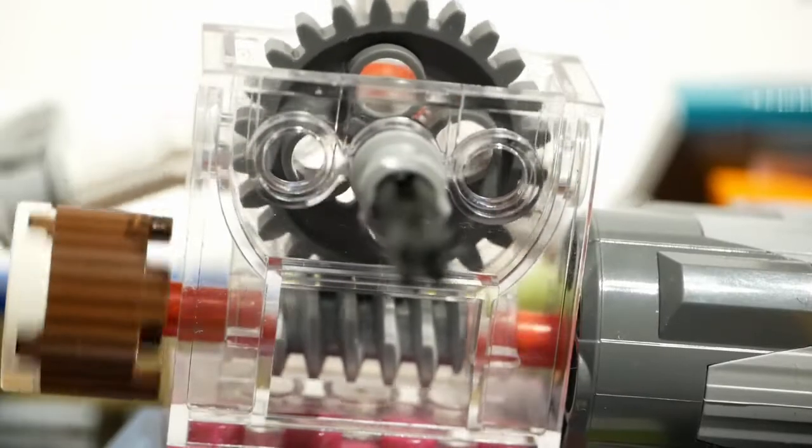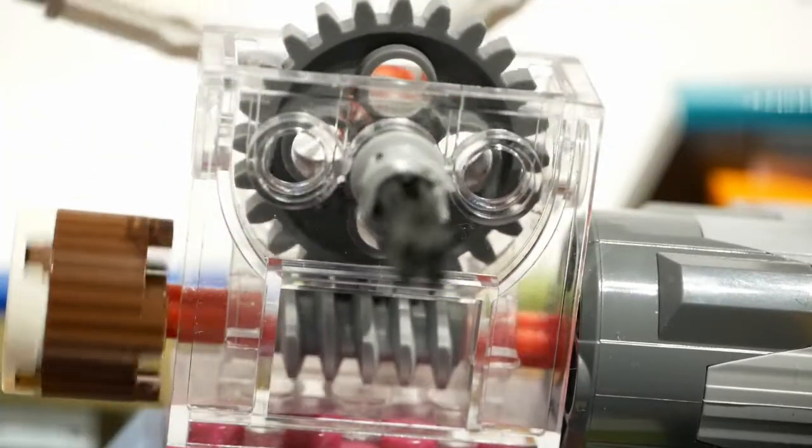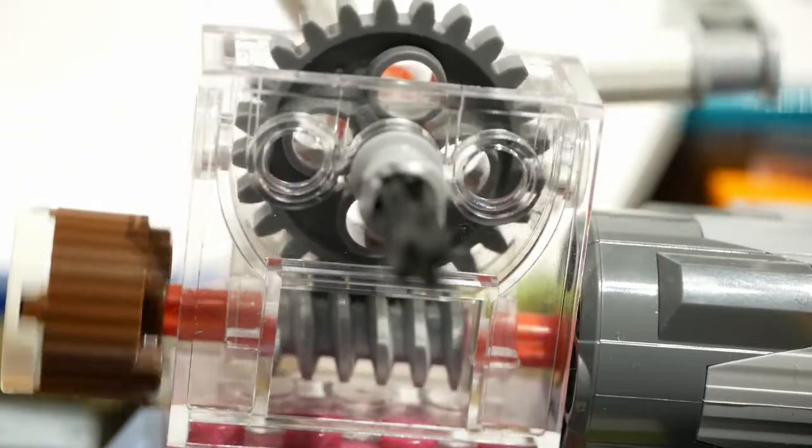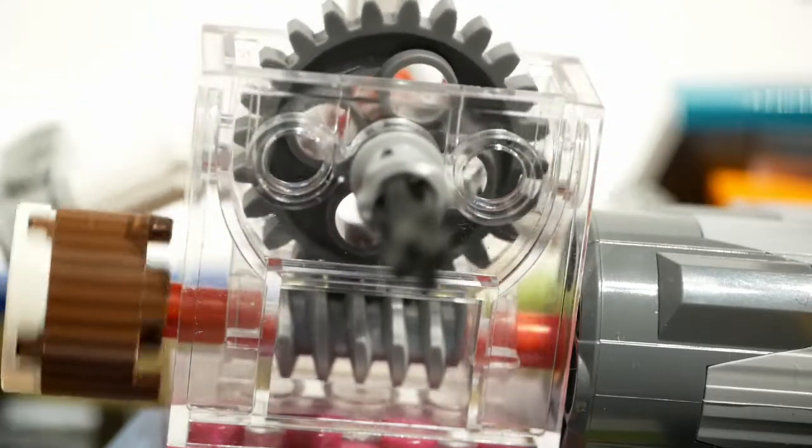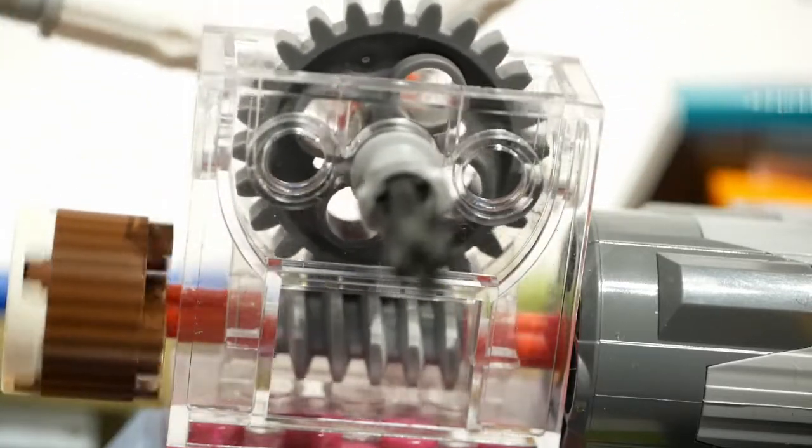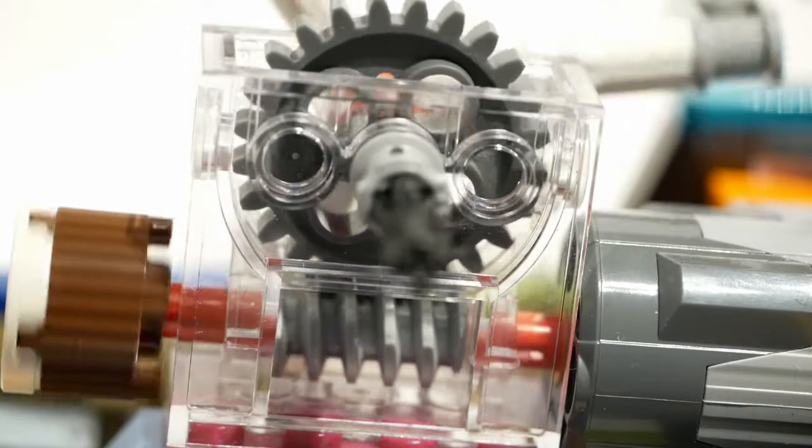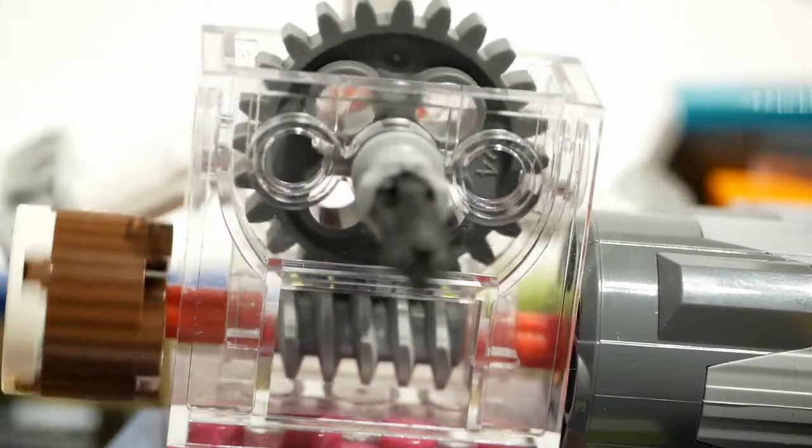The paddles at each side are driven via a shaft from the motor which has a worm gear attached, meshing with a 24-tooth gear at right angles to the drive shaft, mounted in a transparent gearbox, which means you can see the workings going round.